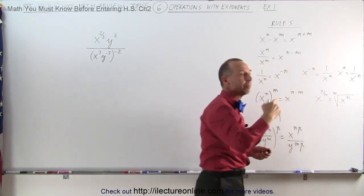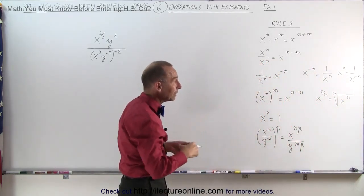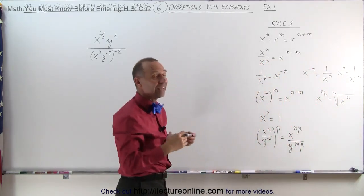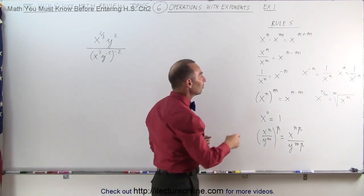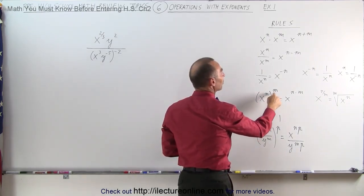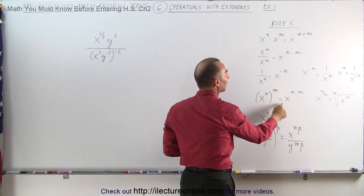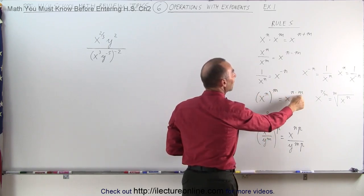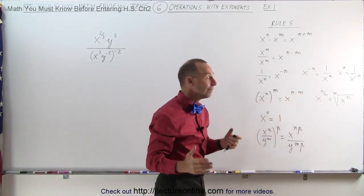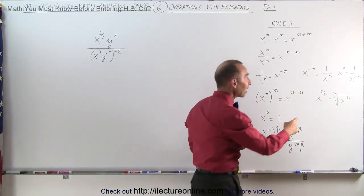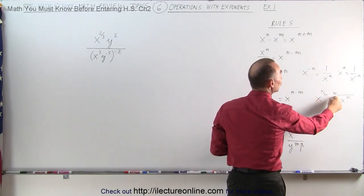Or if you want to bring it to the denominator, x to the minus n brought to the denominator becomes 1 over x to the positive n. You can also write x to the n as 1 over x to the minus n. Whenever you move from the denominator to the numerator, or from the numerator to the denominator, the sign of the exponent changes.